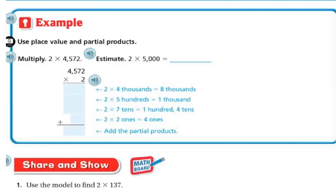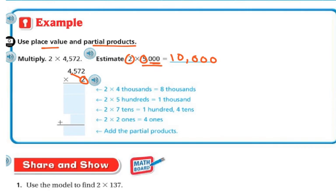So if I were to estimate 2 times 4,572, I could say it's close to 2 times 5,000. And 2 times 5 is 10, and then I have my three zeros, so 2 times 5,000 is 10,000. So now if I'm going to use partial products and place value, I am going to multiply 2 times the 4,000, and 2 times 4,000 is 8,000.